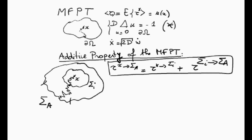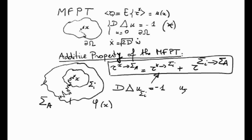To prove this, we use the uniqueness property of the linear elliptic partial differential equation of type star. The time to go from x to σᵢ is by definition a solution of d·Δu = -1, which we call u_σᵢ, also written τ_σᵢ, with u = 0 on the boundary σᵢ.